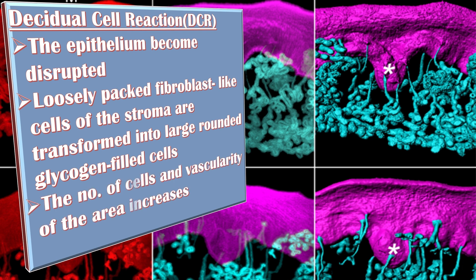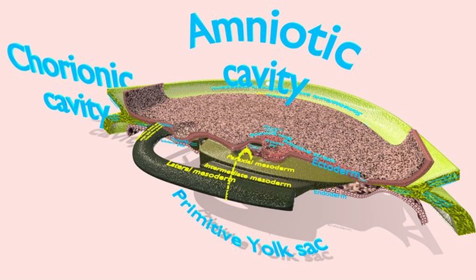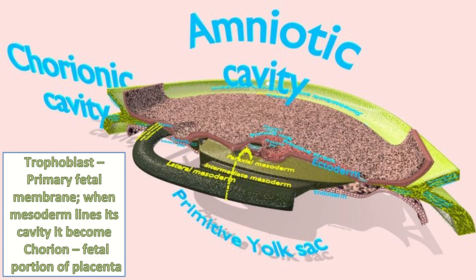Third, the number of cells and the vascularity of the area increases. Fourth, the decidual cells thus form an implantation chamber around the embryo. The trophoblasts are the primary fetal membranes.